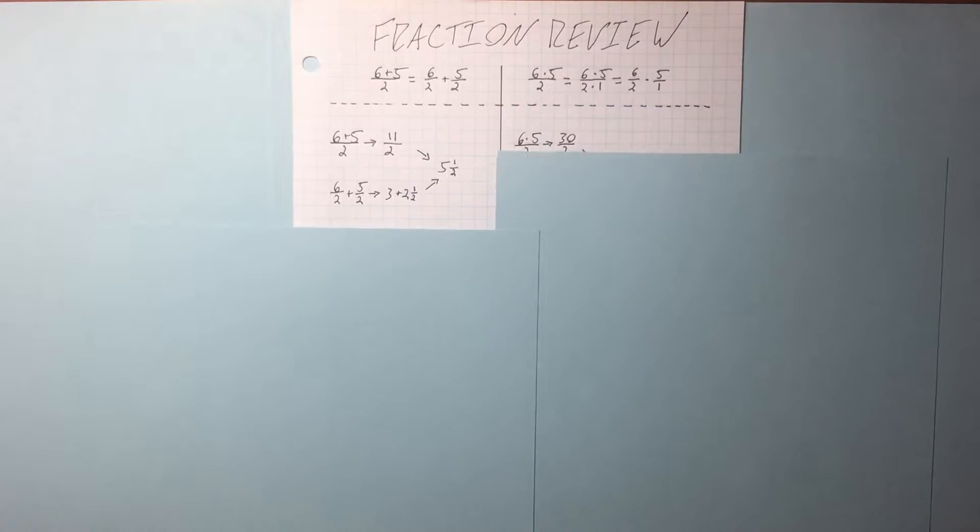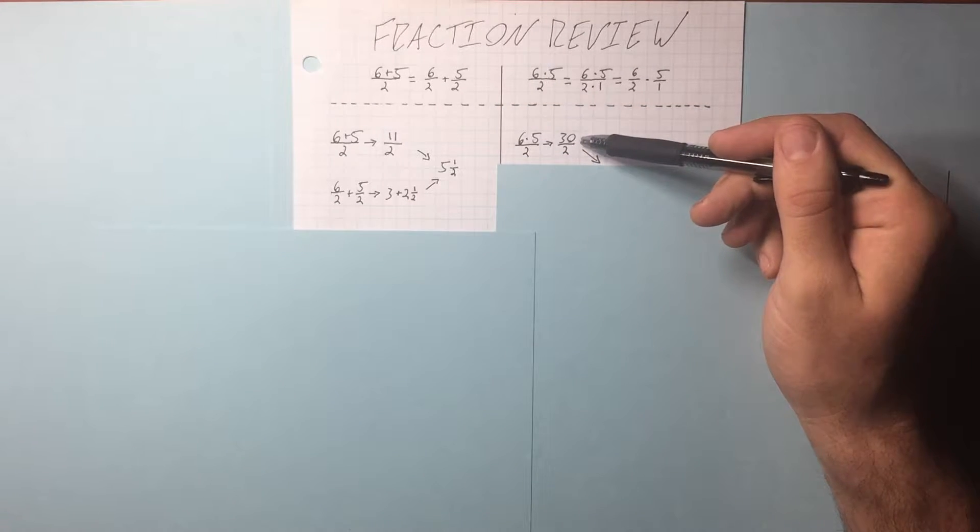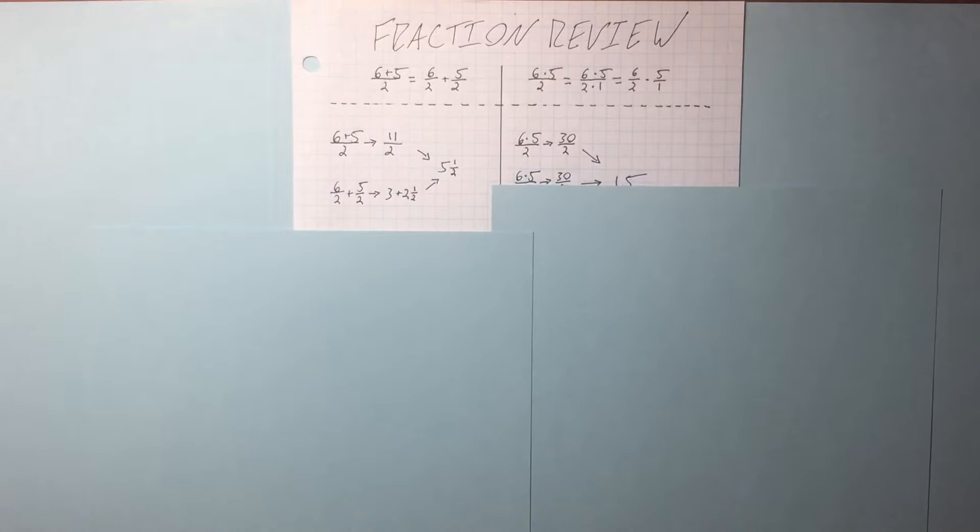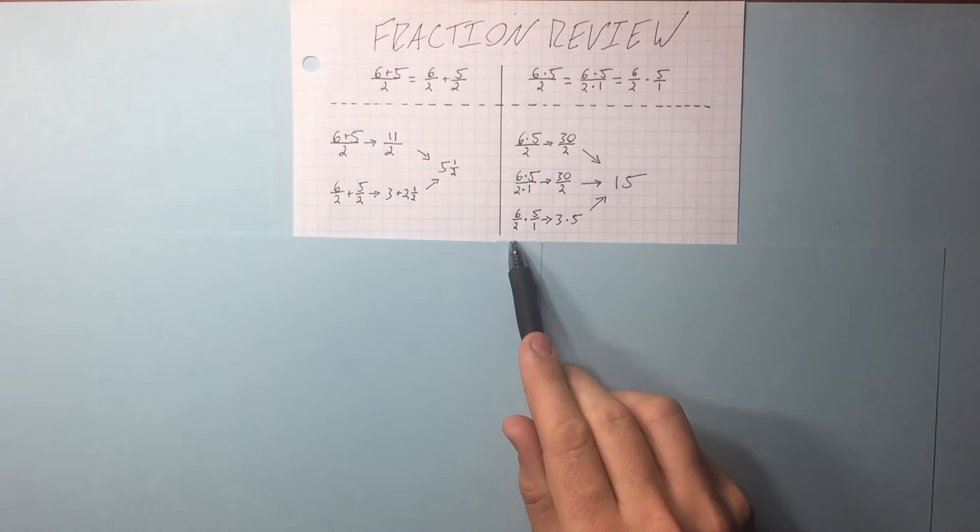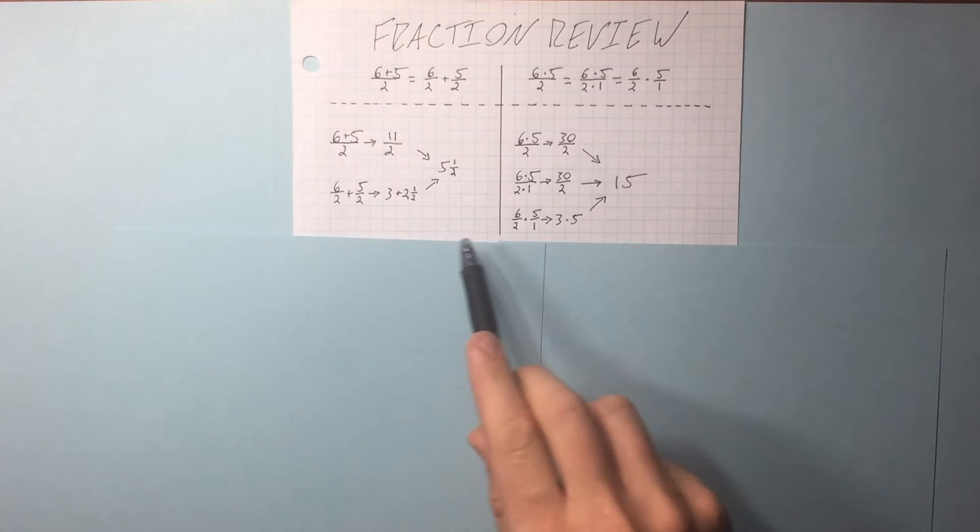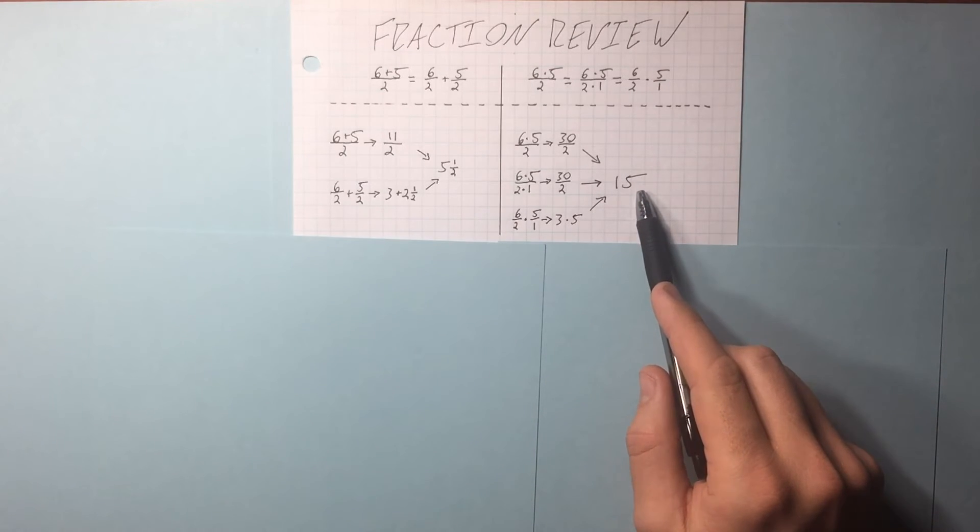I'm going to show you how it works. Here's our first. Do the multiplication in the numerator. We get 30 over 2. Here's our second option. Multiplying the denominator by 1 doesn't really change anything. I do the division here much like I did the division here, and we get to 15.